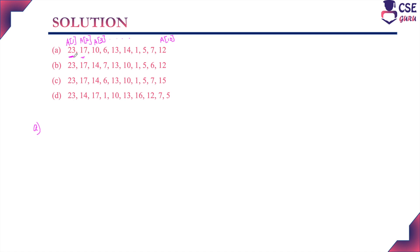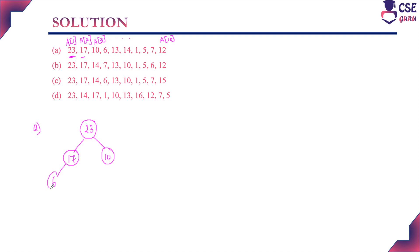For option A, 23 occupies A[1] as the root node. Its left child is 17 and its right child is 10. The next elements fill left to right in binary tree form, so 6 will occupy the left child of 17 and 13 will occupy the right child of 17.